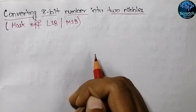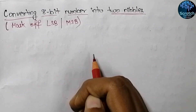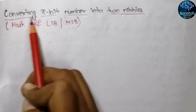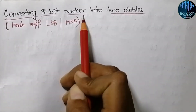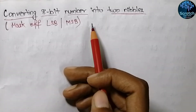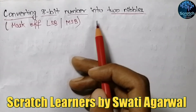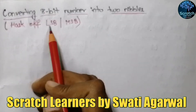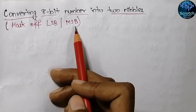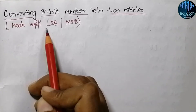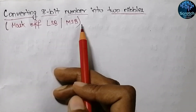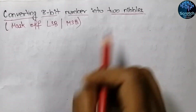Hello everyone and welcome back to our YouTube channel. Today in this video we will see the assembly language program of converting an 8-bit number into 2 nibbles. This process is also known as masking off — that means you can be asked to mask off the least significant bit or the most significant bit of an 8-bit number. If you mask both the LSB and MSB of a number then it will be converted into 2 nibbles.